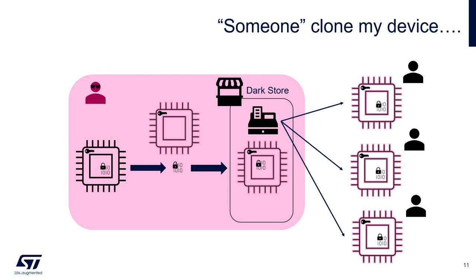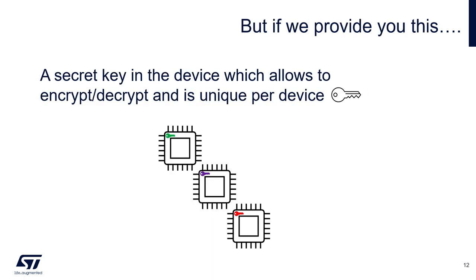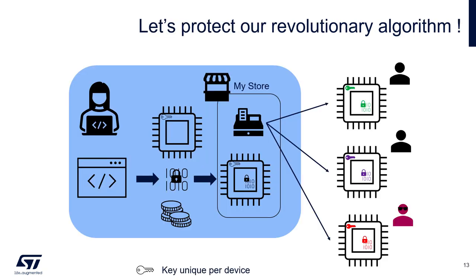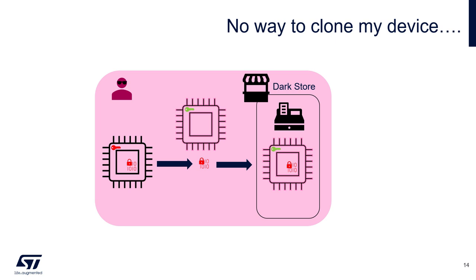But if the hacker has some production capability, he will still be able to produce clone devices. An additional property of this pre-provisioned key is needed to address this problematic — and the answer is that the key must be unique per device. If the pre-provisioned key is unique per device, then any asset encrypted on one MCU cannot be decrypted on another one. Thanks to this unicity, the encrypted asset is unique per device, meaning each device has different static content embedded, but with the same dynamic functionality. So if the hacker extracts a firmware with encrypted assets from one device and flashes it into another one, this clone won't be functional.